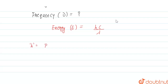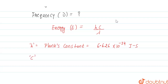Here, h is Planck's constant and c is the velocity of light, with a value of 3.0 × 10⁸ meters per second.